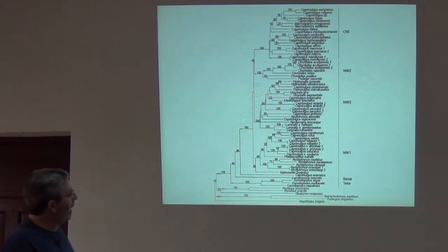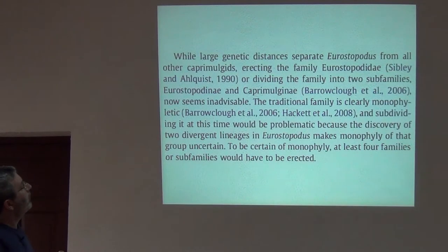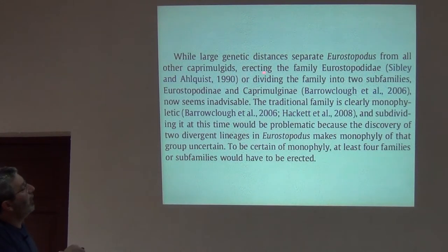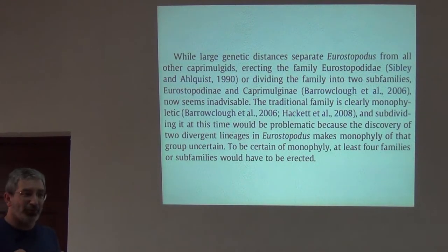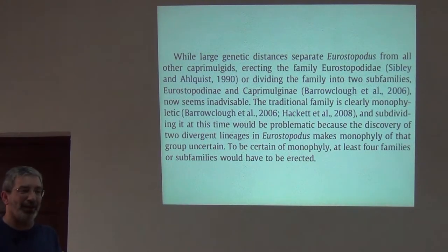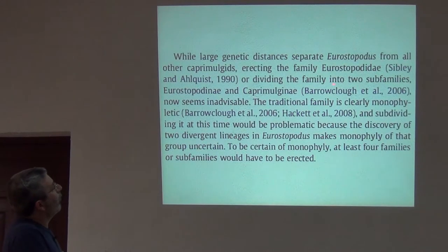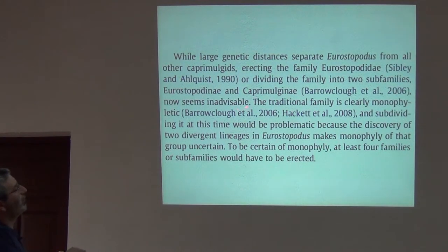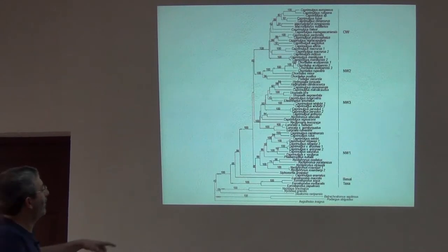While large genetic distances separate Eurystopodus from all other caprimulgids, erecting the family Eurystopodidae — as suggested by Sibley and Alquist in 1990, which was DNA-DNA hybridization phenetic analysis dressed up as phylogenetic analysis, a very dark era in ornithology — or dividing the Caprimulgidae into two subfamilies now seems inadvisable. The traditional family is clearly monophyletic.